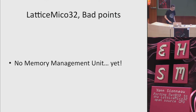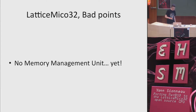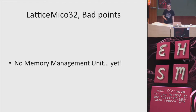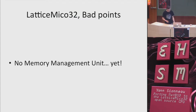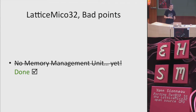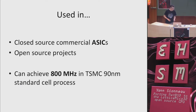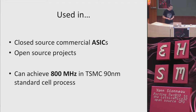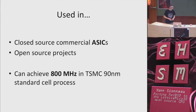There is only one bad point: there is no memory management unit yet. That's bad because without an MMU you can't run a modern operating system like macOS, Linux, NetBSD, or Windows — you need virtual memory to make Unix process separation work. So the first thing I did was add a memory management unit inside the CPU. The CPU is used in closed-source commercial chips and open source projects like Milky Mist One, and with some tests it can achieve 800 MHz on a modern chip process.